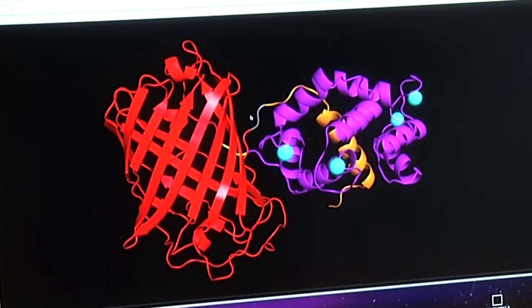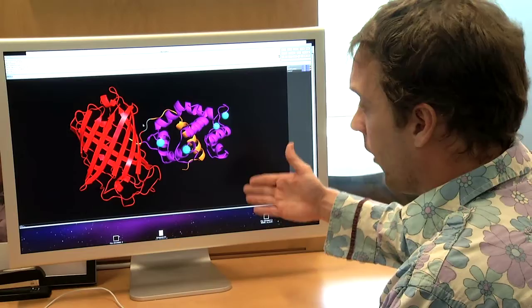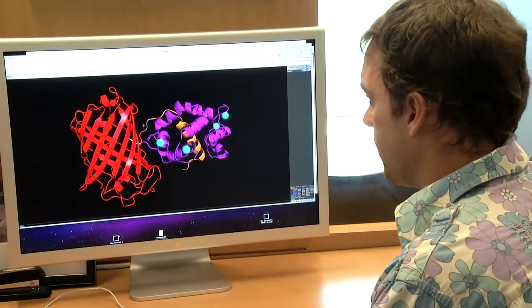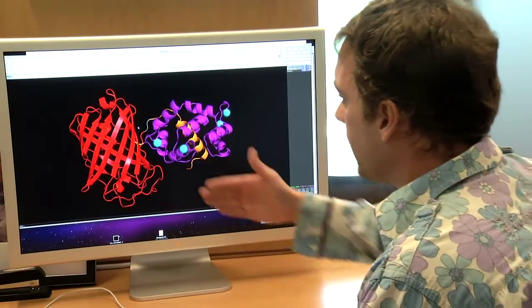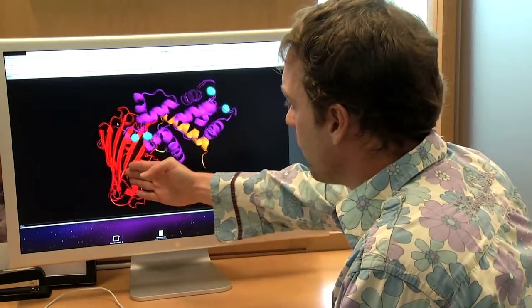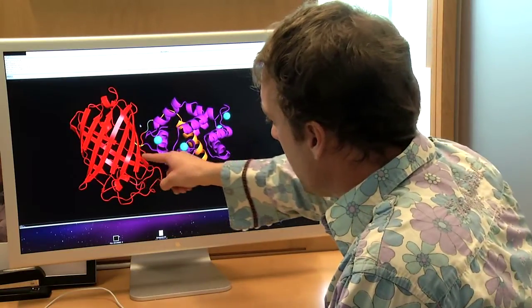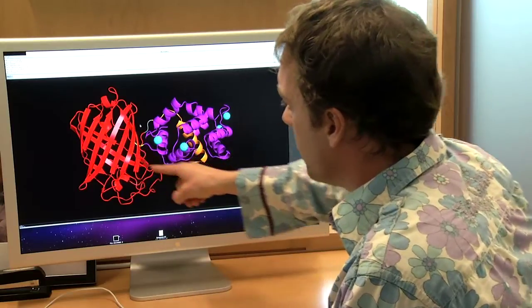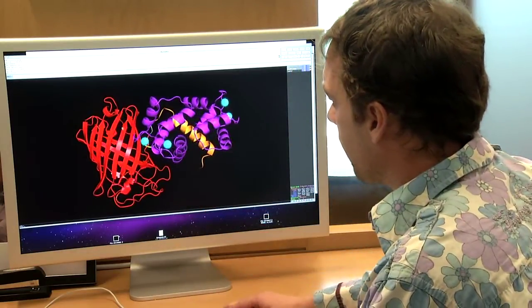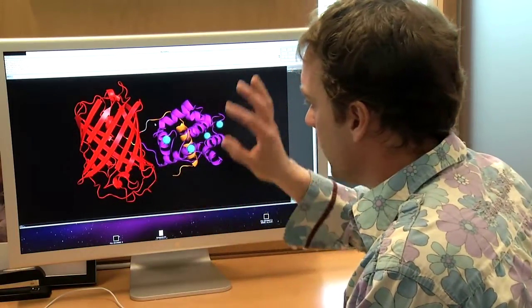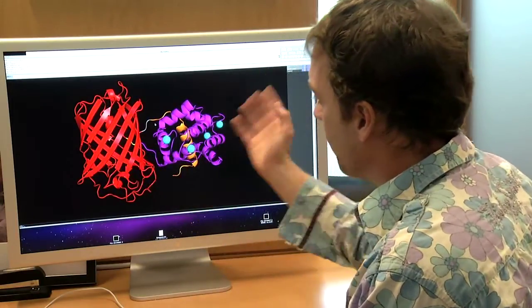What we're looking at here is the crystal structure of an early generation red calcium probe made by the Genie Project. This is a circularly permuted red fluorescent protein. The thing that makes it red, called the chromophore, is in the middle of this big barrel, and the rest of the protein wraps around it to keep it happy and make it fluorescent.